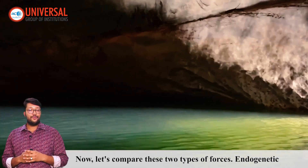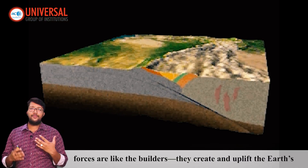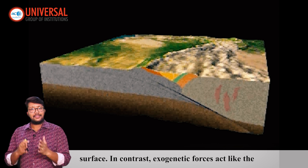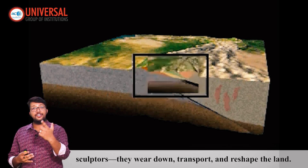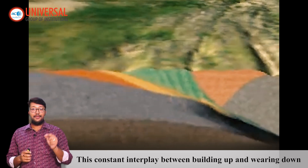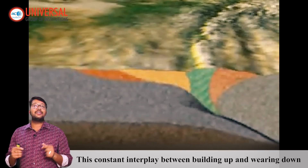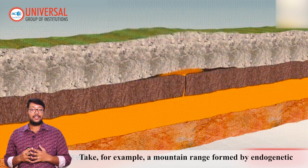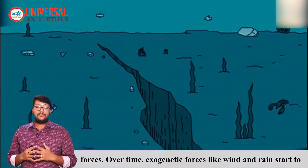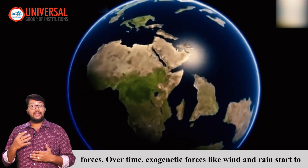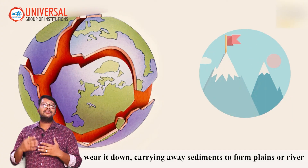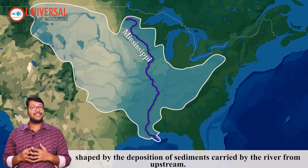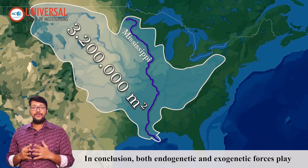Now let's compare these two types of forces. Endogenetic forces are like the builders — they create and uplift the earth's surface. In contrast, exogenetic forces act like the sculptors — they wear down, transport, and reshape the land. This constant interplay between building up and wearing down creates the dynamic shapes we see on the earth. Take a mountain range formed by endogenetic forces: over time, exogenetic forces like wind and rain wear it down, carrying sediments to form plains and river deltas. The Mississippi River delta, for example, has been shaped by the deposition of sediments carried by the river from upstream.